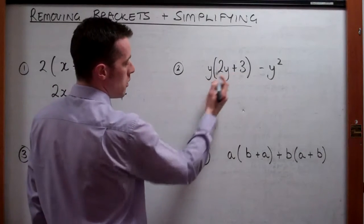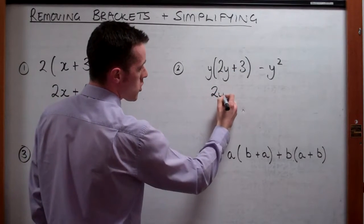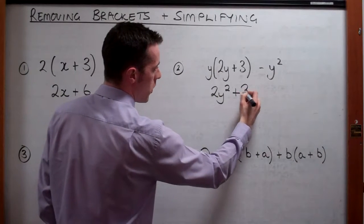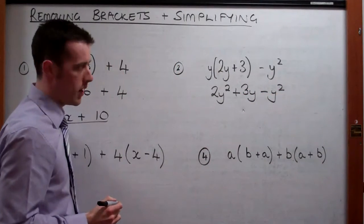Next one here we've got y times 2y gives us 2y squared. And we need to add on the y times 3. So that's 3y and then we're taking away our y squared at the end there.